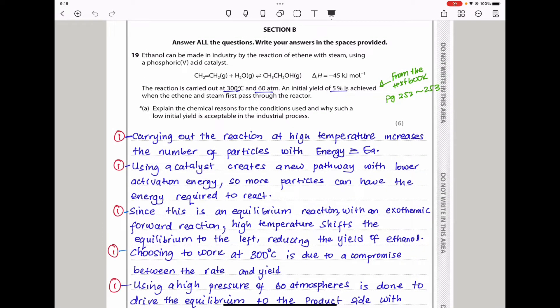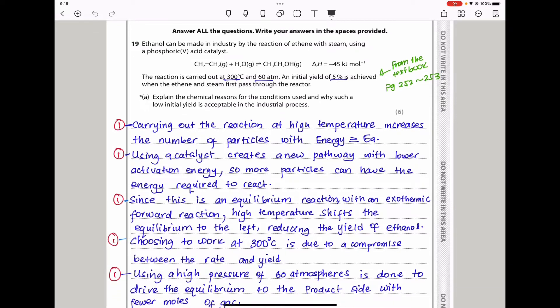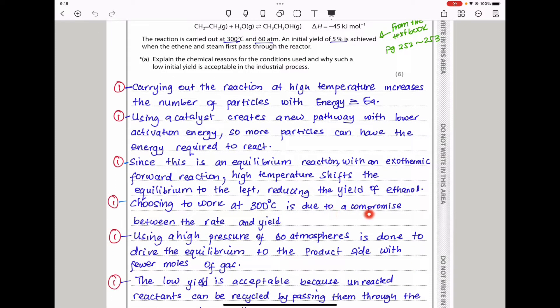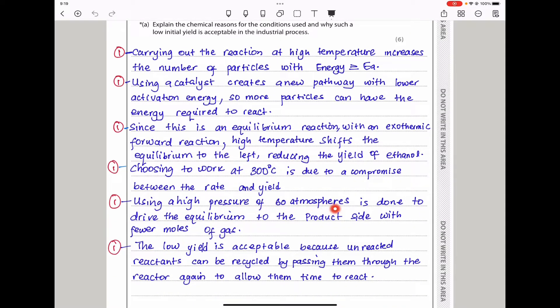The key thing is temperature increases the rate of reaction. However, because the forward reaction is exothermic, increasing the temperature causes equilibrium to shift to the left, producing lower ethanol yield. That is going to be a disadvantage in terms of yield, but it's an advantage in terms of rate. So choosing to work at 300 degrees is due to the compromise between the rate and the yield. Using a high pressure of 60 atmospheres drives equilibrium to the product side with fewer moles or fewer molecules of gas.